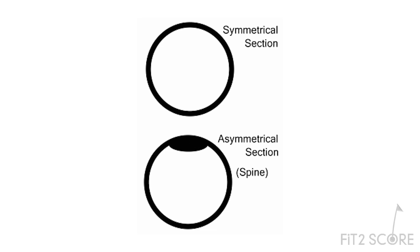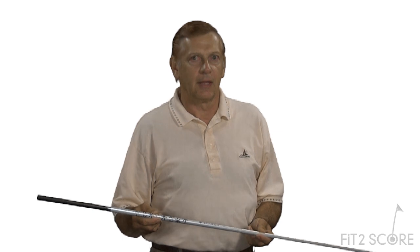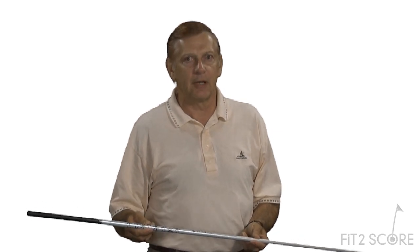And this asymmetry, or spine, will influence how the shaft bends. And this can be found by using a spine finder. Now we're going to take a look at some spine finders.